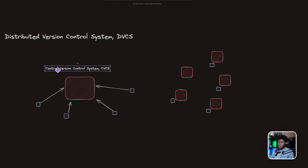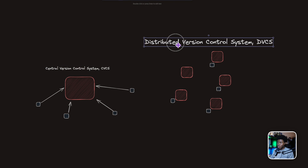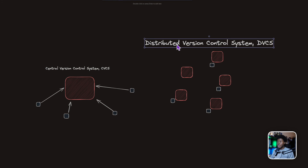Central version control system and distributed version control system each have their own pros and cons. In some ways CVCS is better than DVCS, and in other ways DVCS is better than CVCS. In another lesson, I'll dive deeper into the advantages and disadvantages of both systems.